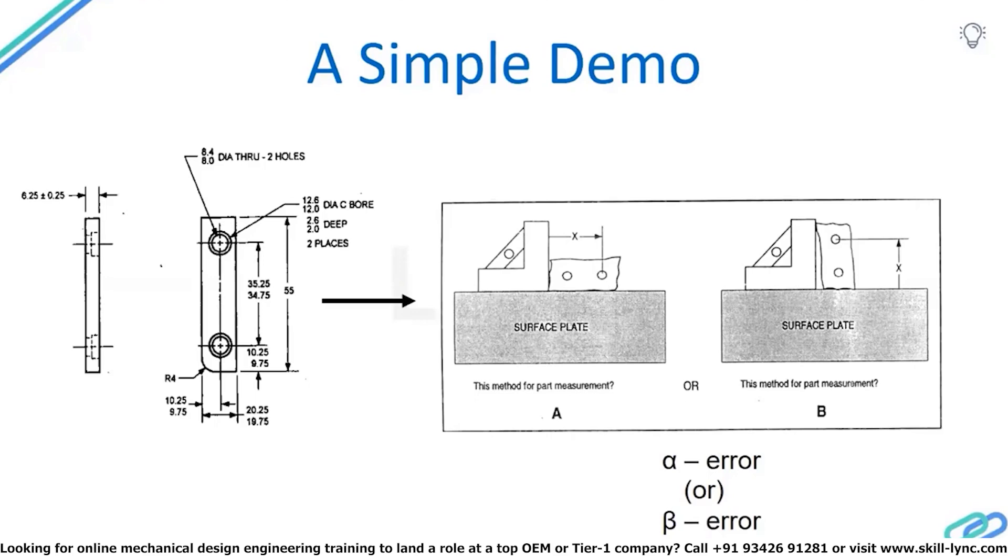Cylindrical tolerancing will more help to our manufacturing and interchangeability, and like such we have so many additional benefits out of GD&T.